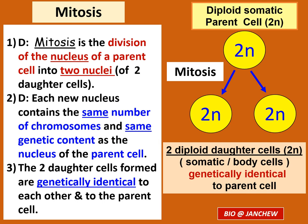First of all, let's discuss what is mitosis. Here's the definition we need to memorize — memorize it word for word. Mitosis is the division of the nucleus of a parent cell into two nuclei of two daughter cells, with the same number of chromosomes found in each daughter cell.